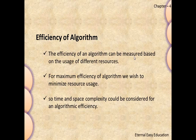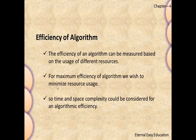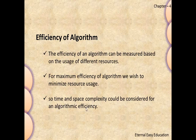The efficiency of an algorithm can be measured based on the usage of different resources — that is, how far the algorithm is efficient to do the task. A problem can have any number of algorithms based on the idea of a developer, so we have to decide among a set of algorithms which is most suitable for a particular solution. For maximum efficiency, we wish to minimize resource usage. If an algorithm gives a solution with less resource usage, it is called an efficient algorithm. Time and space complexity are the two factors implementing efficiency.